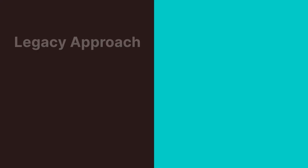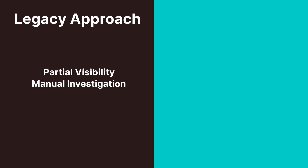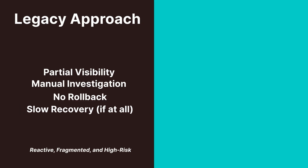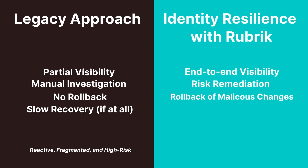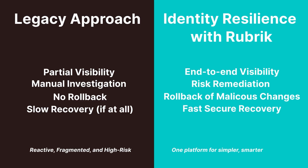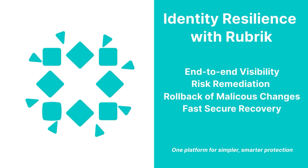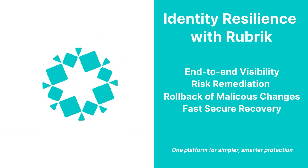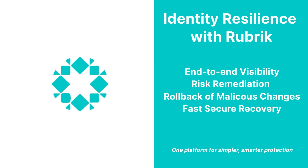So, two choices: continue down the route of piecing together disparate solutions that only deliver part of the story and provide slow manual remediation, or reclaim your time and sanity by letting Rubrik take care of your identity needs more holistically — securing your identities before an attack, and helping you bounce back more easily when an attack does occur. One platform delivering simpler and smarter identity resilience, so you and your organization can move forward.